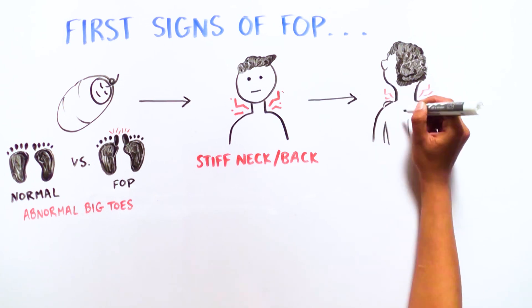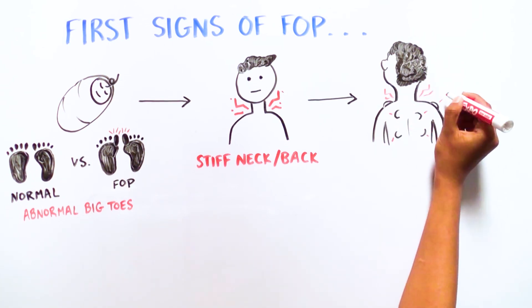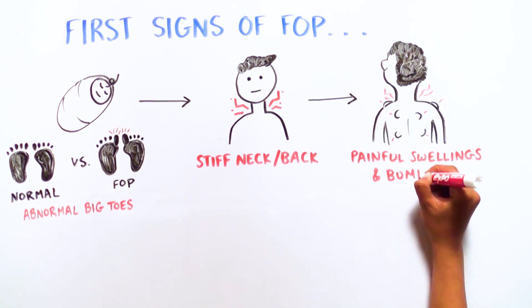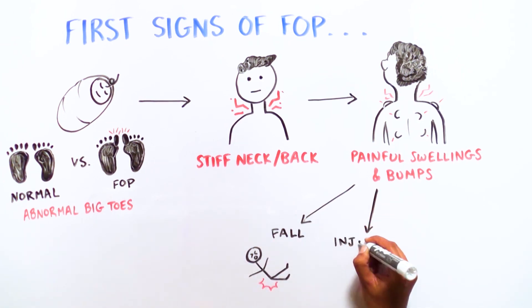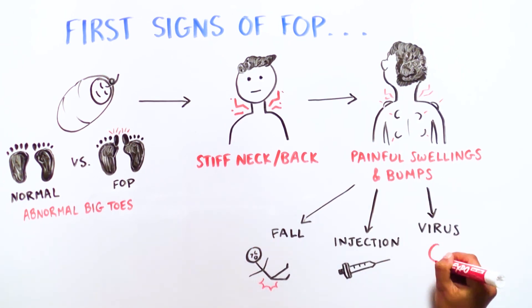Then painful swellings and bumps begin to develop on their heads, necks, shoulders, and backs. These can appear after a fall, following an injection, after a virus, or for no known reason.